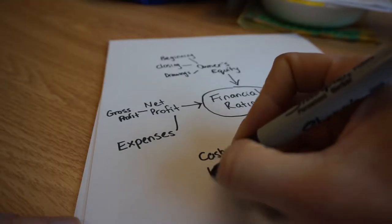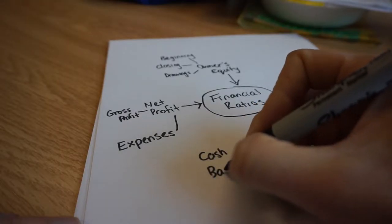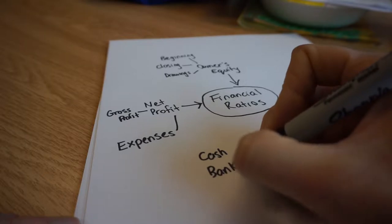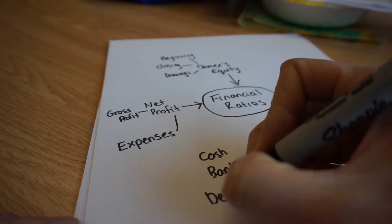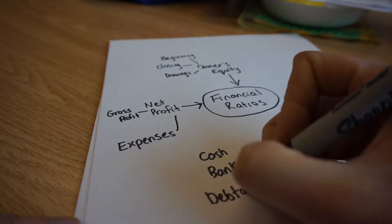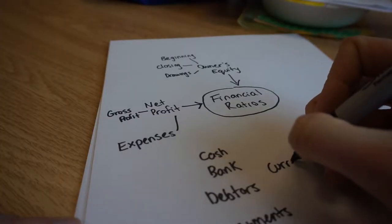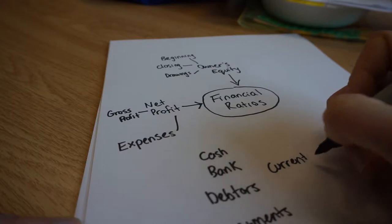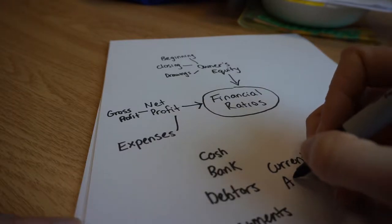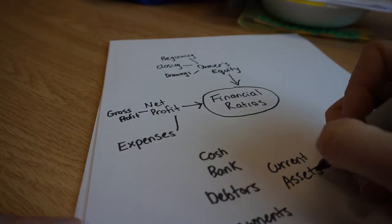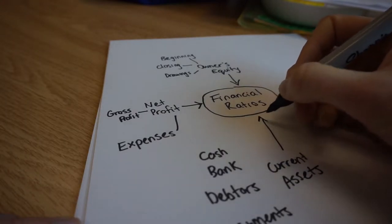Third, cluster concepts that function at a similar level of abstraction and those that are closely related. Fourth, arrange concepts on a map working from the core concept to major points to significant details. Fifth, use branches, arrows,